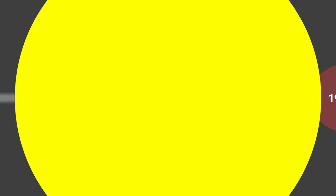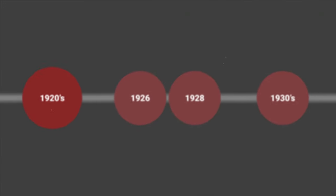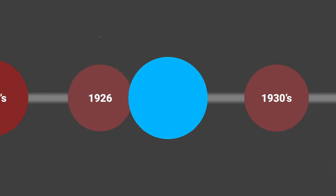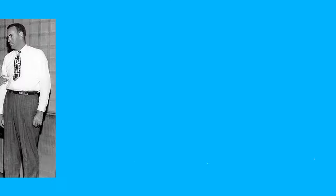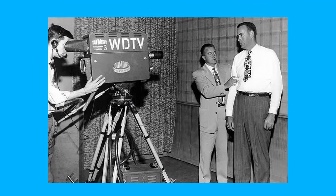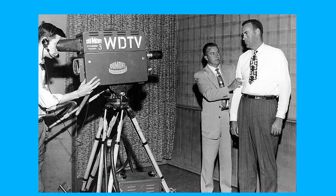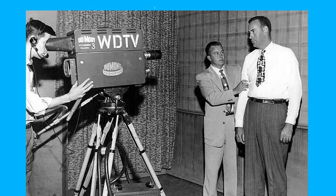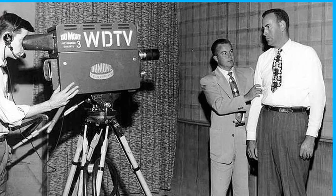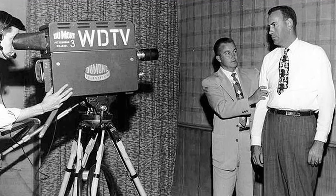1926 was the year the first working mechanical television was made, allowing in the near future the creation of one of the main media forms. In 1928, some of the first television shows were created, jump-starting a whole industry surrounding this media.